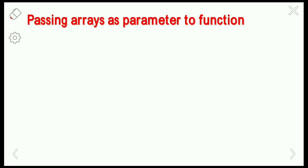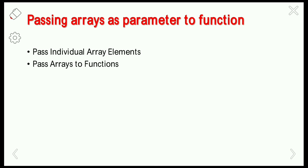The passing of arrays to a function is done in three ways: passing individual array elements, passing arrays to functions (one-dimensional arrays), and passing two-dimensional arrays. In these three ways we can pass arrays to a function.